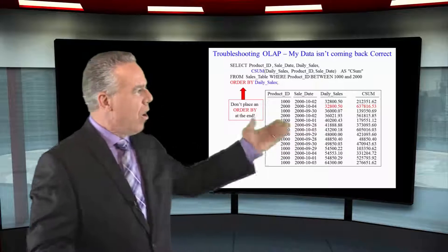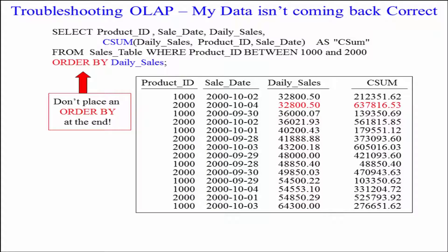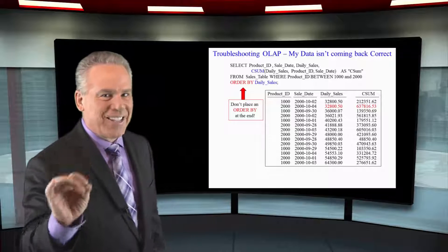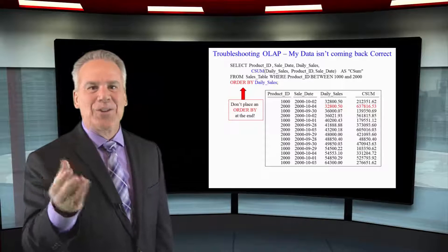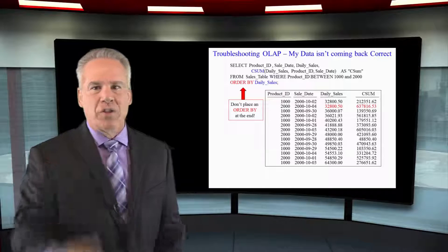We are always going to do the sort inside the ordered analytic. We're doing a CSUM on daily sales after we sort by product ID and sale date in the calculation, and then we do all of the work, get everything added up, and then the ORDER BY at the end scrambles the rows. This is actually the correct data — it's just not in the right order, so it looks like it's really off.